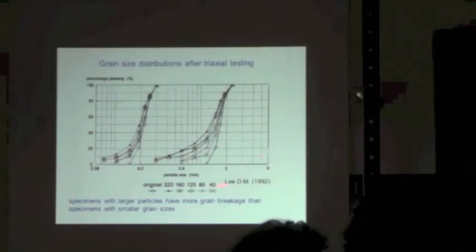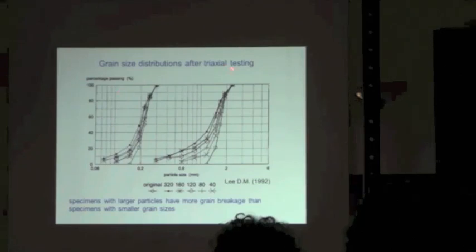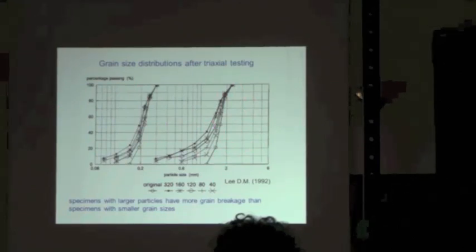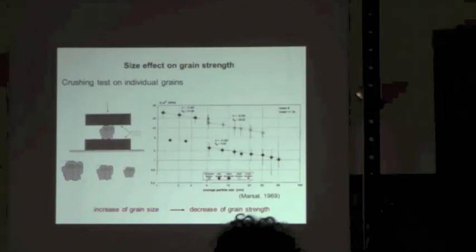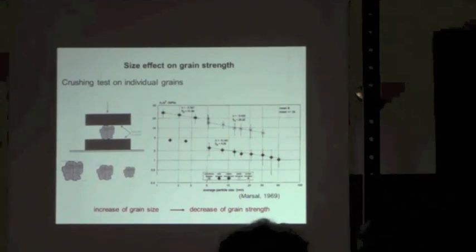Here you have another example of tests performed later by Lee, also with initially parallel homoesthetic grain size distributions, showing the result of drained triaxial tests. This shows that on very coarse material we have much more grain rupture than in small grain size materials. This has also been studied quite a long time ago by Marshall, almost at the same time as Marachi, when they were building very large embankment dams — rockfill dams — at the time.